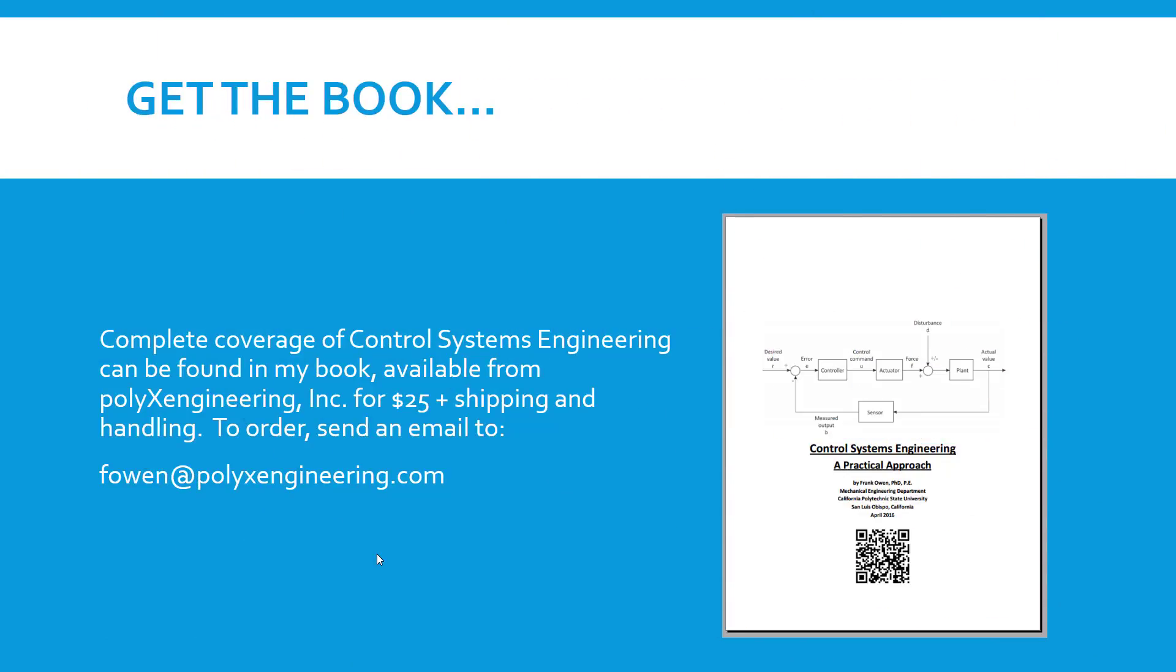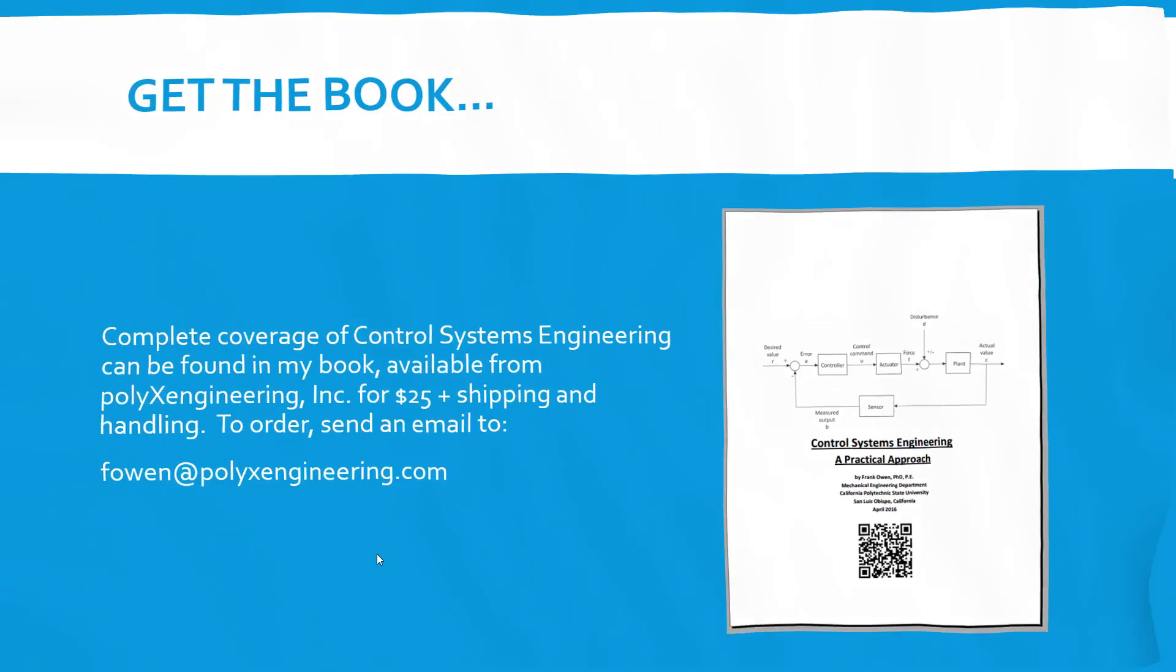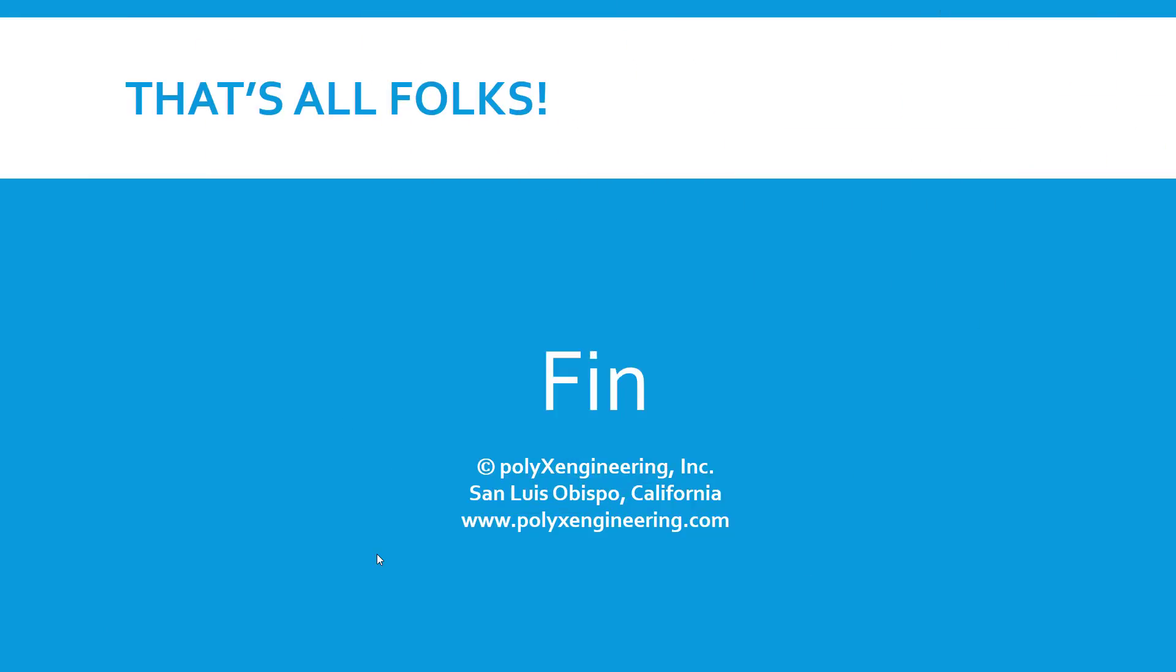Again, all of the details of this are contained in the book that I've written, the practical book about control systems. It's available for $25 through notifying me via email. Thank you. And that concludes this short video on signals in a control loop. Until next time.